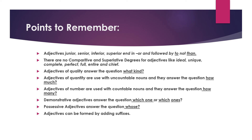Adjectives of quality answer the question 'what kind?' Adjectives of quantity are used with uncountable nouns and answer 'how much?' — how much rice, how much oil, how much water. Adjectives of number are used with countable nouns and answer 'how many?' — how many pencils? Three pencils. How many days? Seven days. Demonstrative adjectives answer 'which one or which ones?' — those pencils, these boys. Possessive adjectives answer 'whose?' — whose house? My house. Adjectives can be formed by adding suffixes, as studied in the previous class.